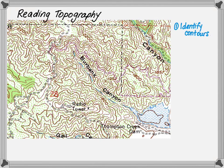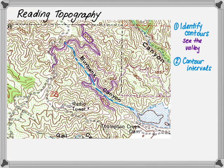The first step is to identify contours. Highlighted in purple, you'll see the contour elevation 1,800 feet. Next, highlighted in purple, you see the contour elevation 2,200. Do you see the valley? Next, we're going to determine the contour intervals. To determine the contour intervals, we need to count the lines between 2,200 and 1,800. You can see there's 1, 2, 3, 4, 5, 6, 7, 8, 9, 10.